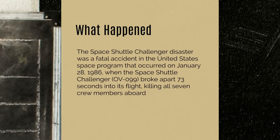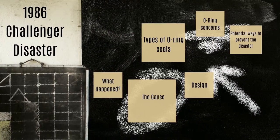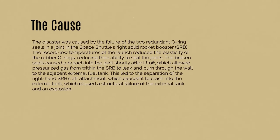The Space Shuttle Challenger disaster was a fatal accident in the United States space program that occurred on January 28, 1986, when the Space Shuttle Challenger OV-099 broke apart 73 seconds into its flight, killing all seven crew members aboard. The disaster was caused by the failure of the two redundant O-ring seals in a joint in the Space Shuttle's right solid rocket booster (SRB). The record low temperatures of the launch reduced the elasticity of the rubber O-rings, reducing their ability to seal the joints. The broken seals caused a breach into the joint shortly after liftoff, which allowed pressurized gas from within the SRB to leak and burn through the wall to the adjacent external fuel tank. This led to the separation of the right-hand SRB's aft attachment, which caused it to crash into the external tank, causing a structural failure of the external tank and an explosion.